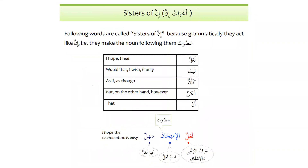Inna has sisters called akhawatu inna. The reason we say 'sisters' is that inna is a particle (kalima) and all particles in Arabic are feminine. There are five sisters: la'alla, layta, ka'anna, lakinna, and inna itself. La'alla has two meanings: at-tarajji (hope) and ishfaq (fear). In today's lesson, our focus is on inna and la'alla; the remaining sisters — layta, ka'anna, and lakinna — we will learn as we proceed in this book.